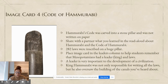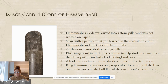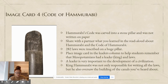282 laws were inscribed on a huge pillar. This would go in the leaders column of your graphic organizer because it helps you remember that the Mesopotamians had a leader and that they had laws. A leader is very important to the development of a civilization. King Hammurabi was not only responsible for writing all the laws but also oversaw the building of the canals — he did a lot of things for the city of Babylon and for Mesopotamia.